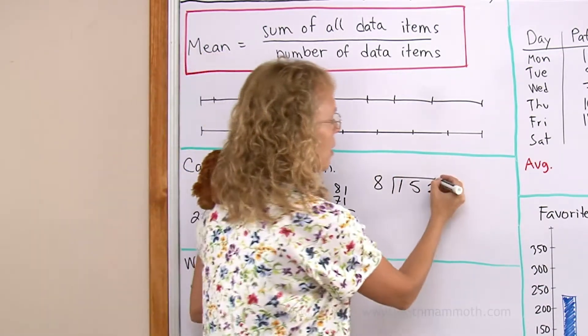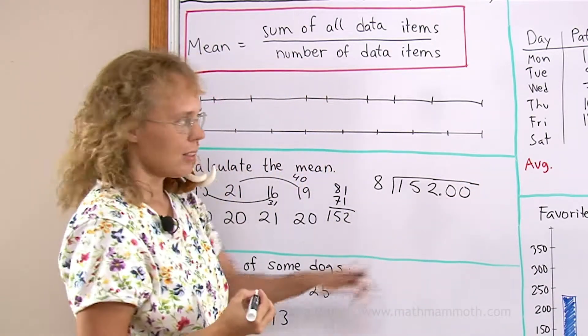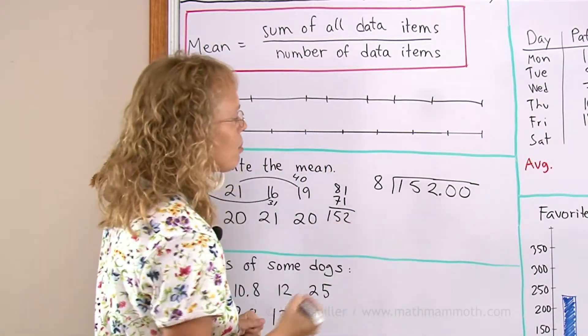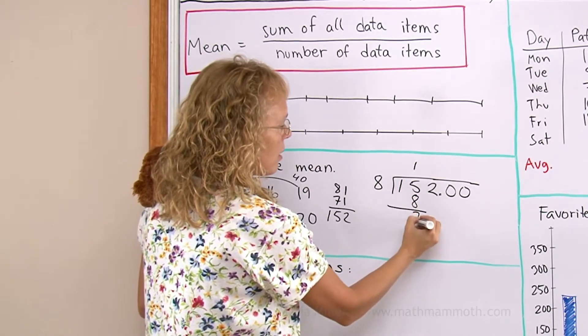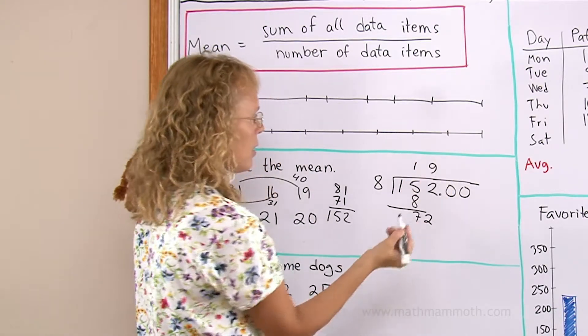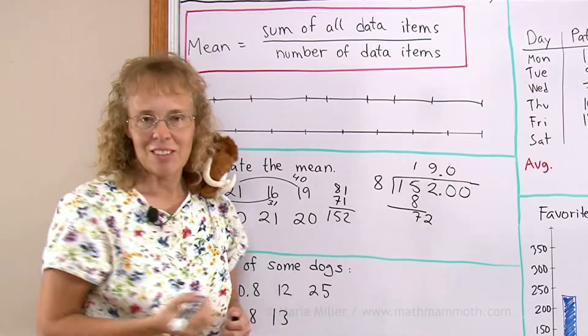I'm going to use long division. I want to have a decimal in it, so I'll put decimal zeros here to prepare for that. 8 goes to 15 once, to 72 nine times. Oh well that's an even division then. The average is 19.